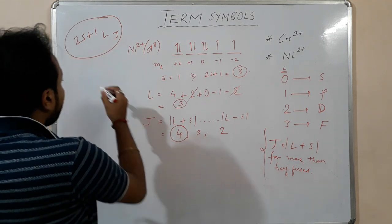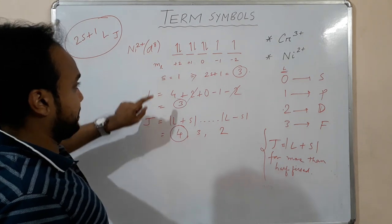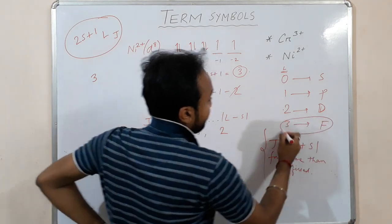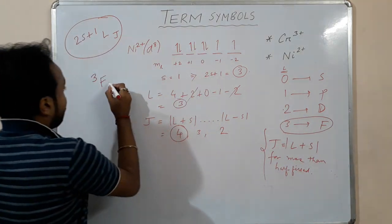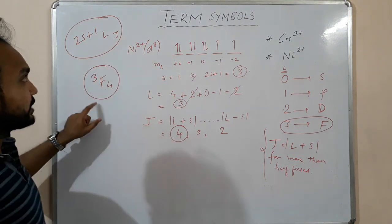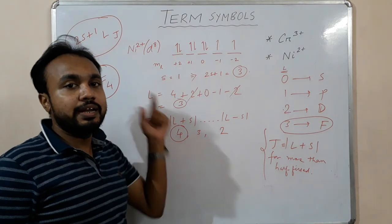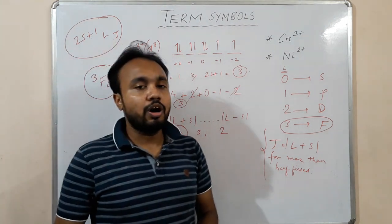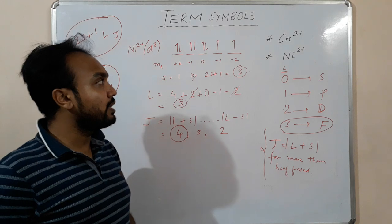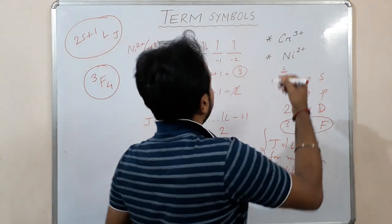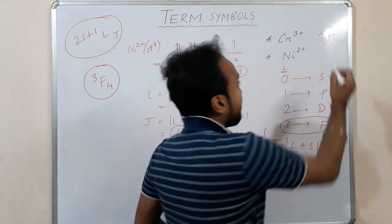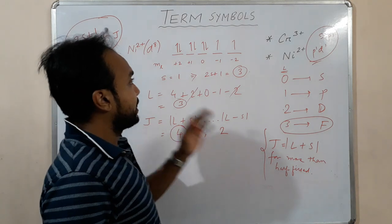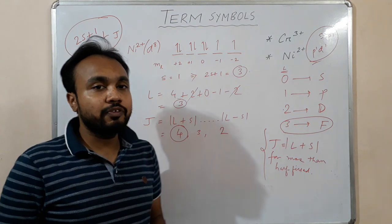The ground state term symbol for nickel 2+ (d⁸ system) is ³F₄, since 2S+1=3, L=3 corresponds to F, and J=4. This is how you find the ground state term symbols of transition metal ions. In the next video I will discuss term symbols for multi-electron systems like S¹P¹ or P¹D¹ configurations. Thanks for watching.